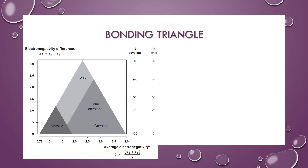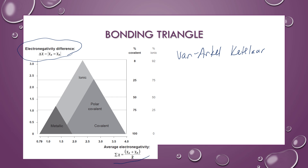Here's a picture of the bonding triangle from the IB data booklet — it's also called the Van Arkel-Ketelaar diagram. It essentially shows the types of bonding present at different electronegativity points for two elements. We're only going to do this for binary compounds — two elements. On the y-axis, you'll see the difference in electronegativity between the two, and on the x-axis, you'll see the average electronegativity of the two. You can find the electronegativities in the data booklet as well.